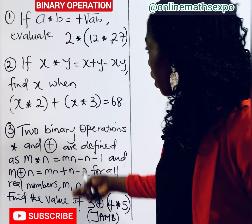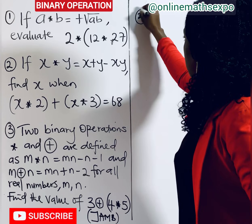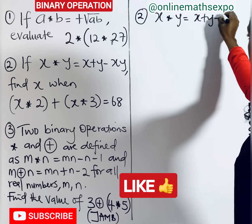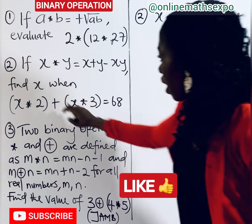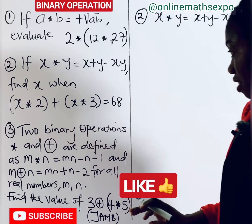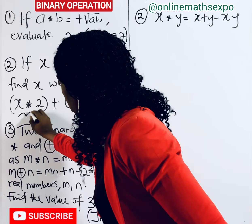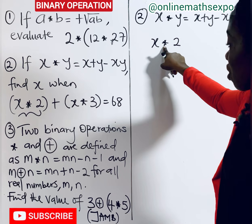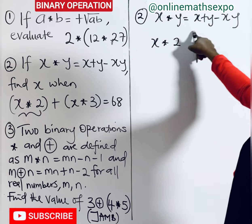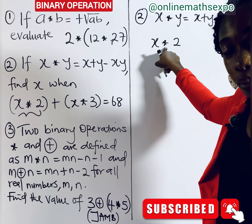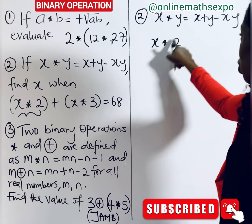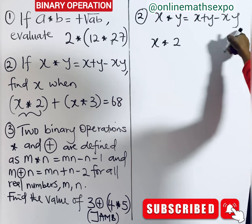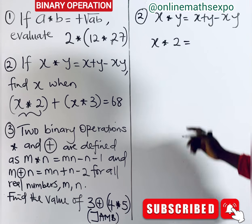For question two, we are told that x ∗ y is defined as x + y − xy. We are asked to find x when (x ∗ 2) + (x ∗ 3) = 68. Remember this is a binary operation defined with an arithmetic expression, so don't treat the operation symbol as a plus or subtraction sign until you apply the definition.